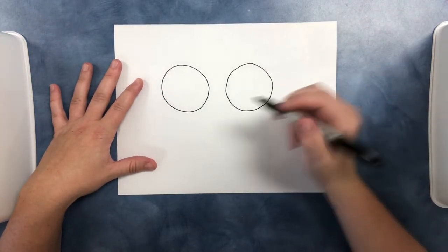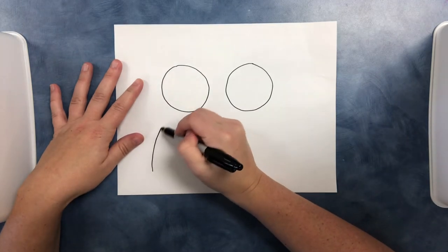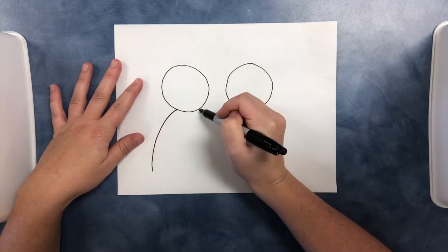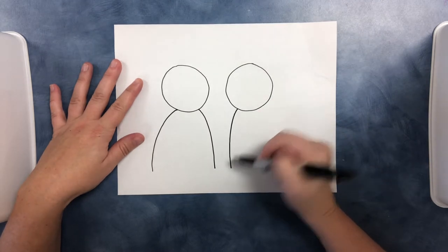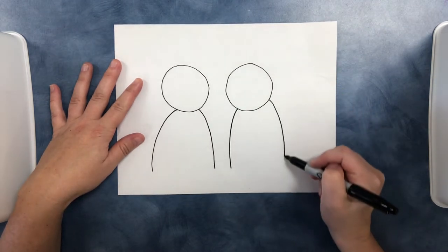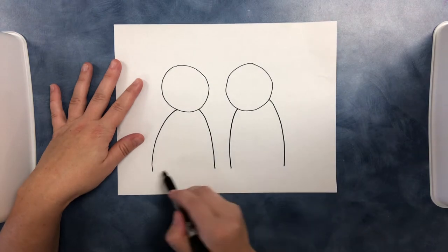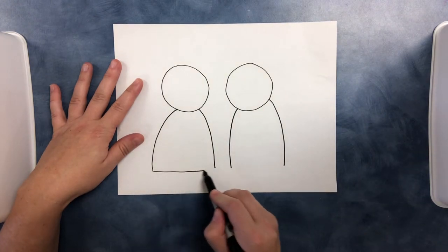Next we're going to add the body and we're going to do a nice rainbow line and go up to the head and connect down, and a rainbow line for the other one and we'll just draw a line across to connect to that.